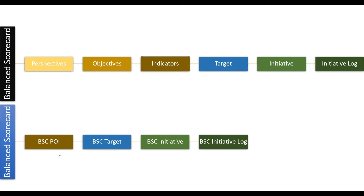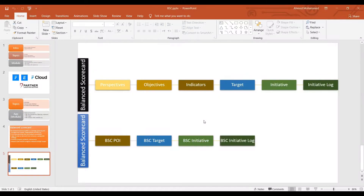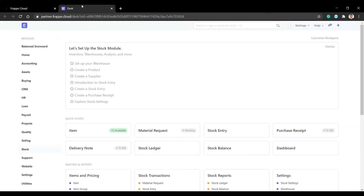In our system we will merge perspective, objective, and indicator into one entity called BCC POI (Perspective Objective Indicator). We will have a type field whose data type is select, with values: perspective, objective, or indicator.